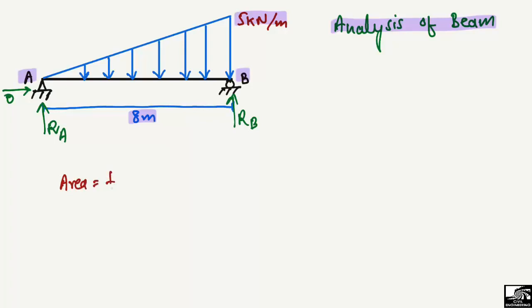The area of the triangle is equal to half base times height. Here the base is 8 meters and the height is 5 kN/m, so the area equals (1/2) × 8 × 5 = 20 kN. This area equals 20 kilonewtons.